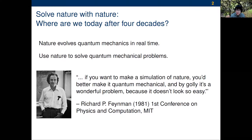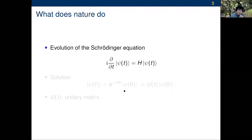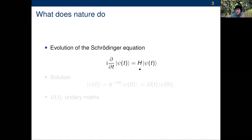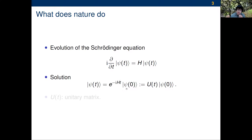We start with MIT and Feynman. The field allegedly started with Feynman at the first conference on physics and computation, which fits the theme of CSE rather well. He said if you want to make a simulation of nature — specifically electronic structure — you'd better make it quantum mechanical, so build a quantum computer. What does nature do? It basically evolves the Schrödinger equation, where H is a many-body quantum Hamiltonian — think of H as a gigantic Hermitian matrix. The solution is a unitary operator, exp(-iHt) applied to initial state psi_0, which we call U(t).